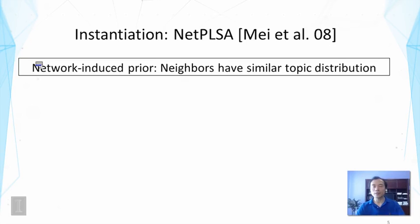In this paper referenced here, a particular instantiation called NetPLSA was studied. In this case, it's the extension of PLSA to incorporate some simple constraint imposed by network. The prior here is the neighbors on the network must have a similar topic distribution. They must cover similar topics in similar ways, and that's basically what it says in English.